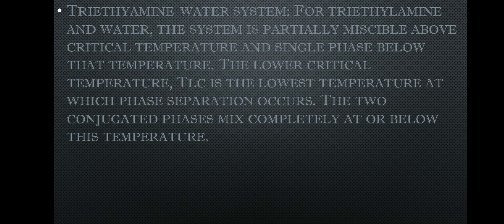Next is the triethylamine and water system, which exhibits a lower consolute temperature (TLC). For triethylamine and water, the system is partially miscible above the critical solution temperature and forms a single phase below that temperature. So if you increase the temperature past the CST, you get partial miscibility (two phases); if you decrease the temperature below CST, you get complete miscibility (single layer). TLC is the lowest temperature at which phase separation occurs — the two conjugate phases mix completely at or below this temperature.